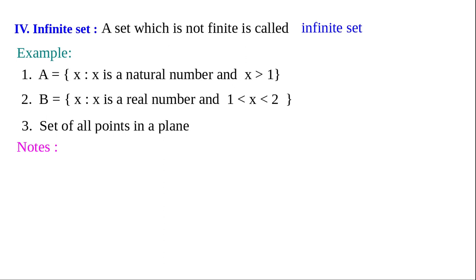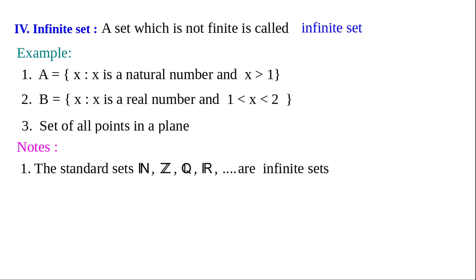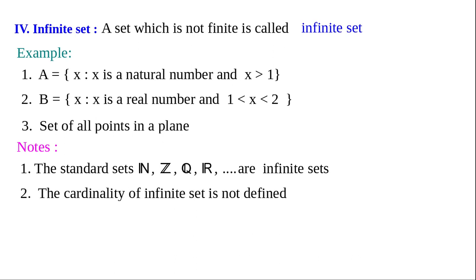Some notes: First, the standard sets ℕ, ℤ, ℚ, ℝ, ℂ, ℤ⁺ etc. are all infinite sets. Second, the cardinality of an infinite set is not defined — we cannot say what the number of elements is. Third, some infinite sets can be written in roster form (like ℕ and ℤ) and some cannot (like ℚ and ℝ). So not all infinite sets can be expressed in roster form.